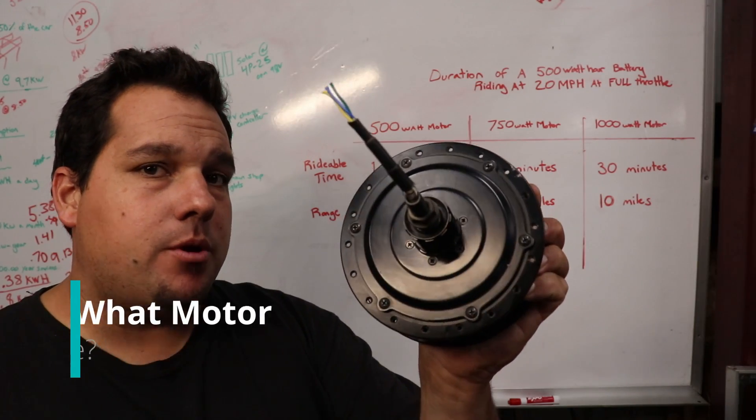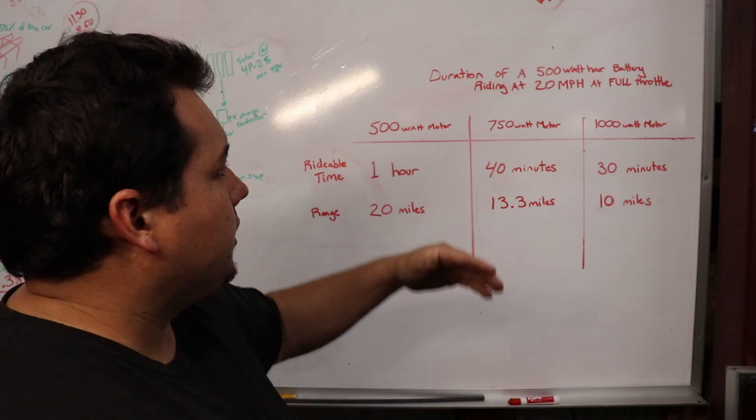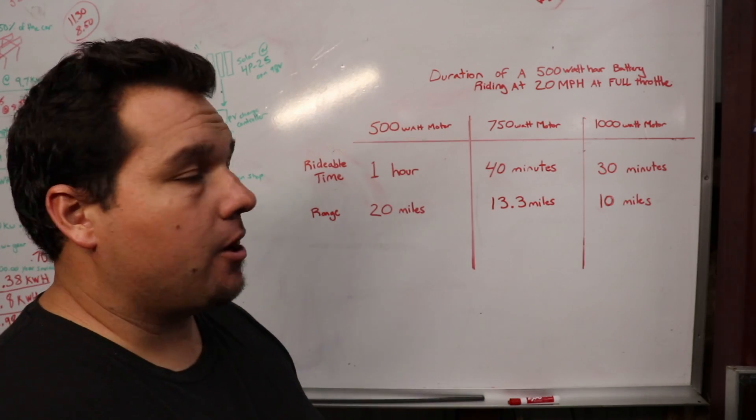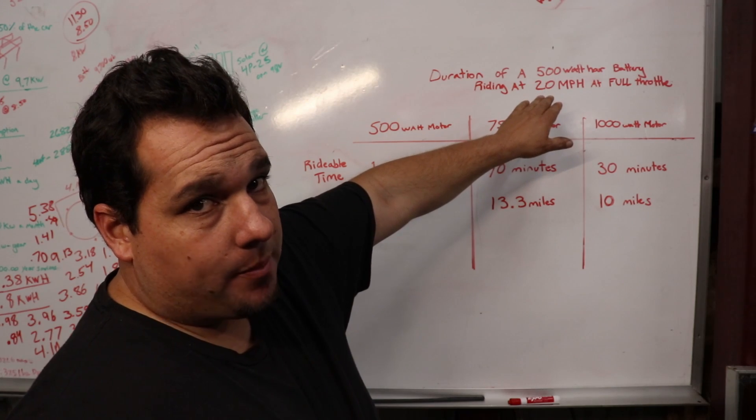So now you're probably thinking, what motor is the one that is good for me? And I've written down a chart here to help figure that out. Now, if you take a 500-watt-hour battery, which means it can store or deliver 500 watts for one hour straight,